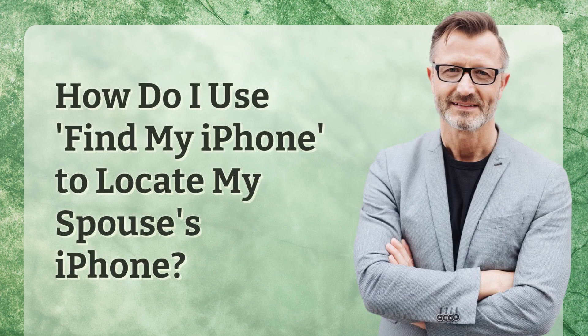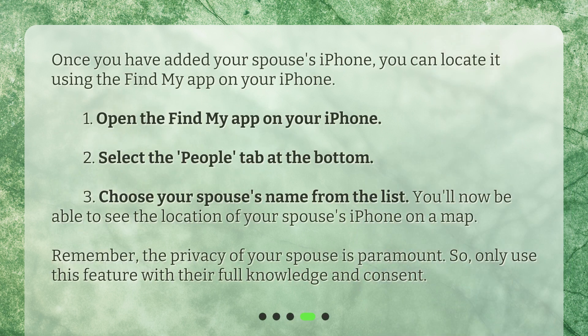How do I use Find My iPhone to locate my spouse's iPhone? Once you have added your spouse's iPhone, you can locate it using the Find My app on your iPhone. Step 1: Open the Find My app on your iPhone. Step 2: Select the People tab at the bottom. Step 3: Choose your spouse's name from the list. You'll now be able to see the location of your spouse's iPhone on a map. Remember, the privacy of your spouse is paramount, so only use this feature with their full knowledge and consent.